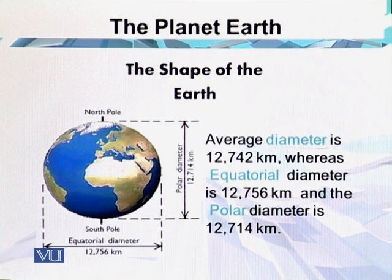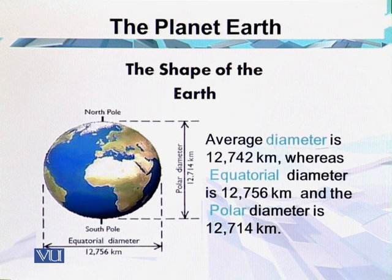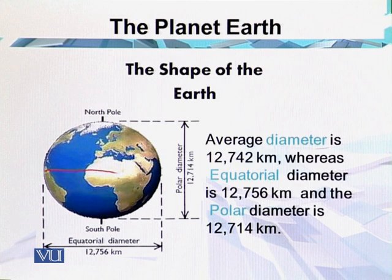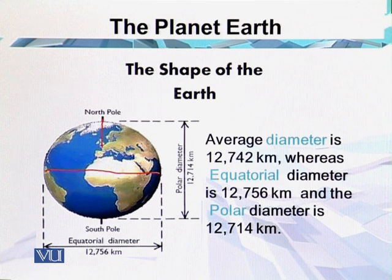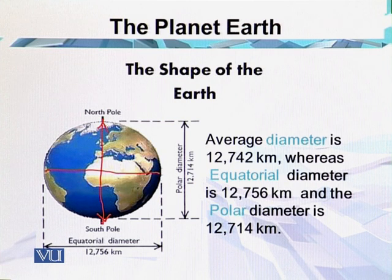You can see here the two diameters of the earth. The average diameter is 12,742 kilometers. The equatorial diameter is 12,756 kilometers, whereas the polar diameter from north pole to south pole is 12,714 kilometers. So there is a difference of about 42 kilometers — the equatorial diameter is 42 kilometers larger than the polar diameter.